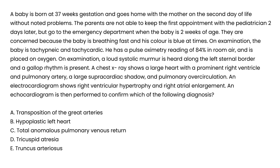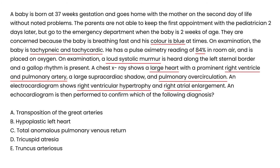Clinical vignette 3: A baby born at 37 weeks goes home on day two without noted problems. Parents bring the baby to the emergency department at two weeks of age concerned about fast breathing and bluish color at times. The baby is tachypneic and tachycardic, with a pulse ox of 84% on room air. A loud systolic murmur is heard along the left sternal border and a gallop rhythm is present. Chest x-ray shows a large heart with a prominent right ventricle and pulmonary artery, a large supracardiac shadow, and pulmonary over-circulation. EKG shows right ventricular hypertrophy and right atrial enlargement. An echo is performed to confirm the diagnosis. The clues — pulmonary over-circulation, right ventricular hypertrophy, and cyanosis — point to TAPVR.